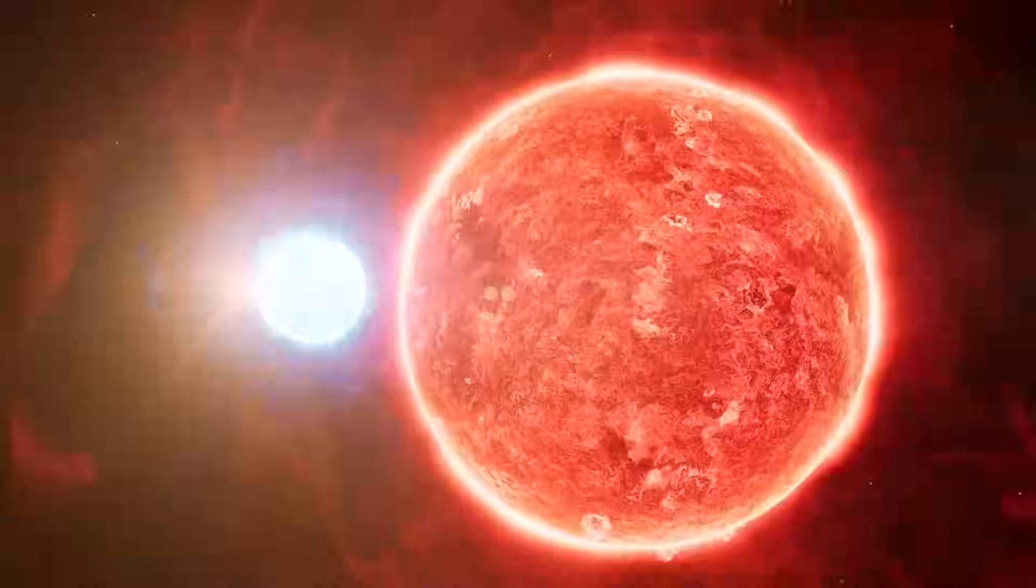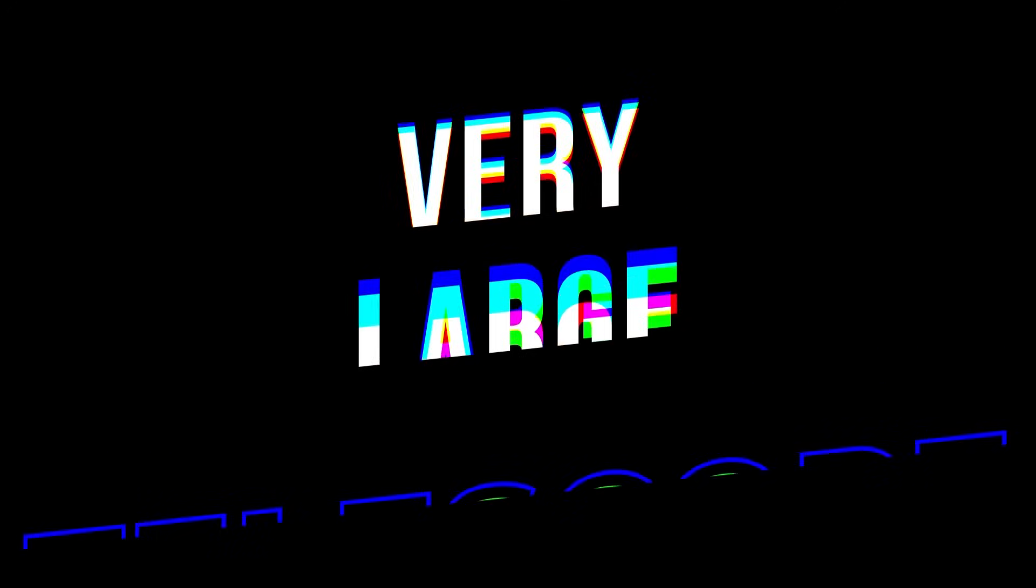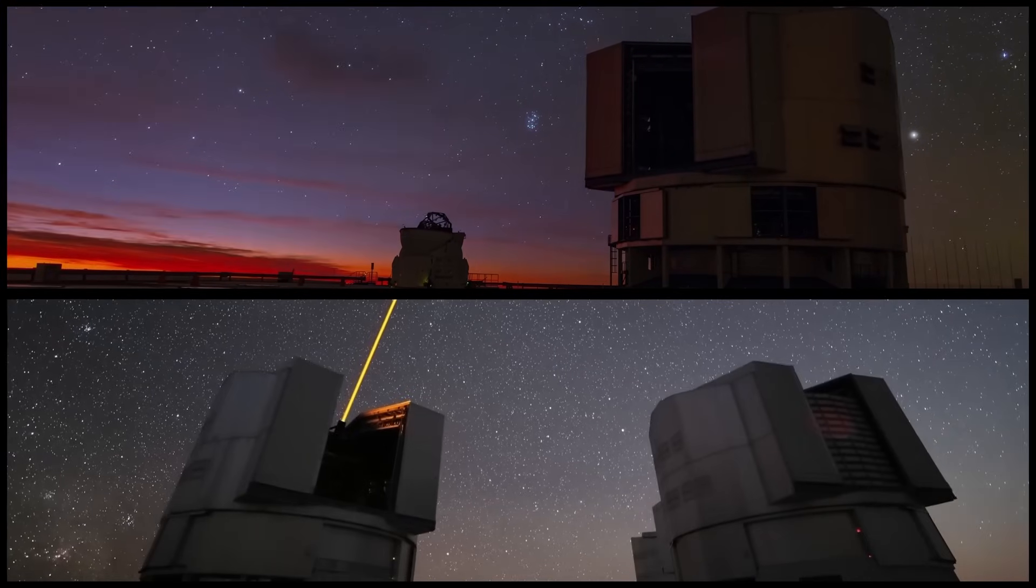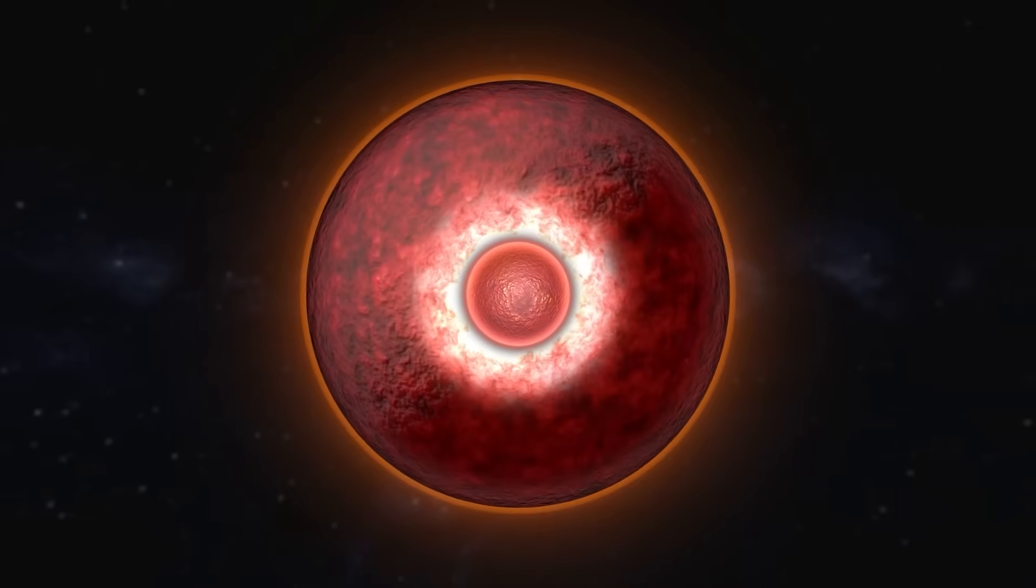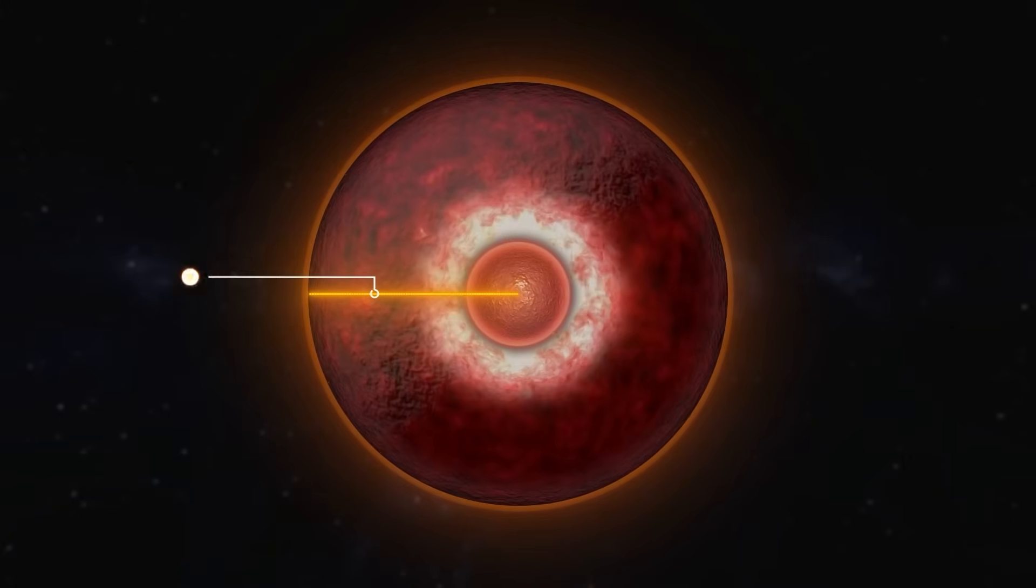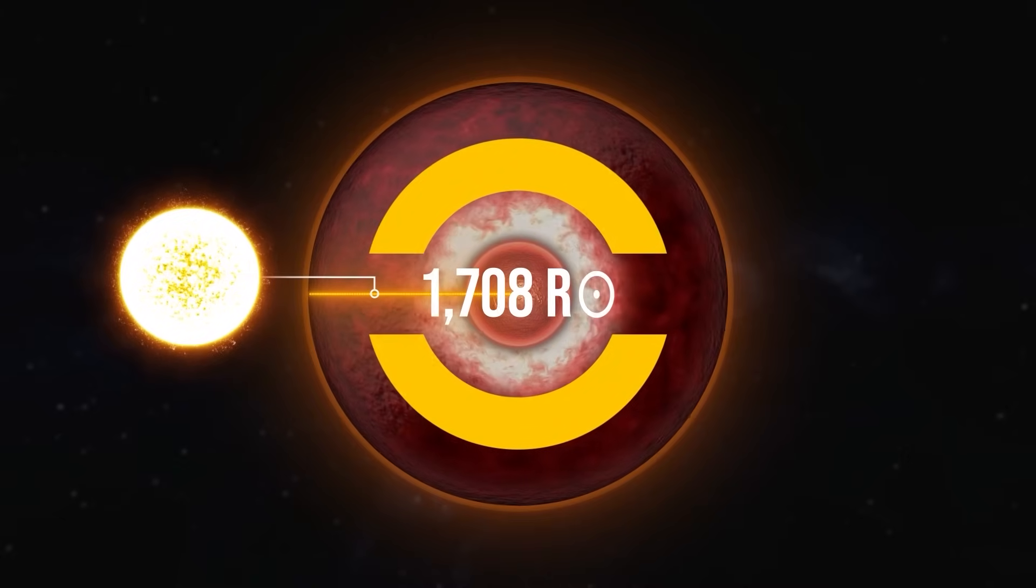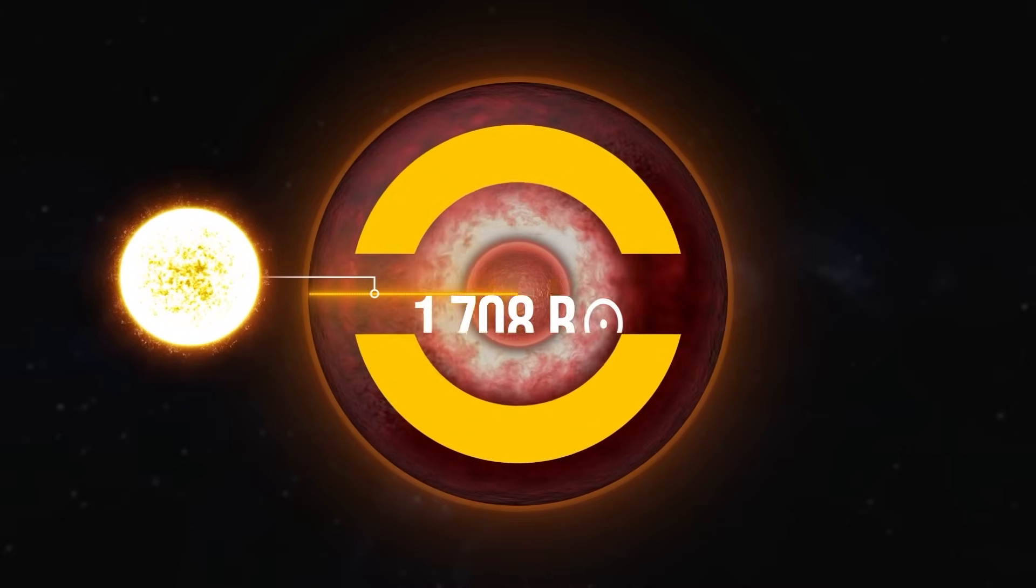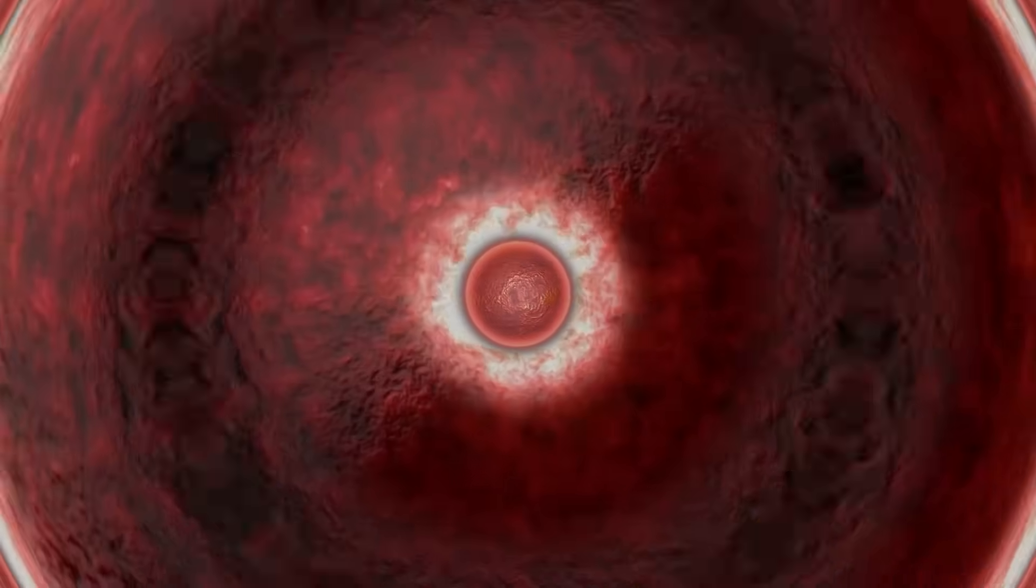Yet even though R Doradus is the largest star in the night sky, it's far from the largest in the universe. Until recently, that title belonged to UY Scuti. In 2012, astronomers used the Very Large Telescope in Chile to measure three red supergiants at the center of our Milky Way. Among them was UY Scuti, whose radius stunned scientists—it measured 1708 solar radii.